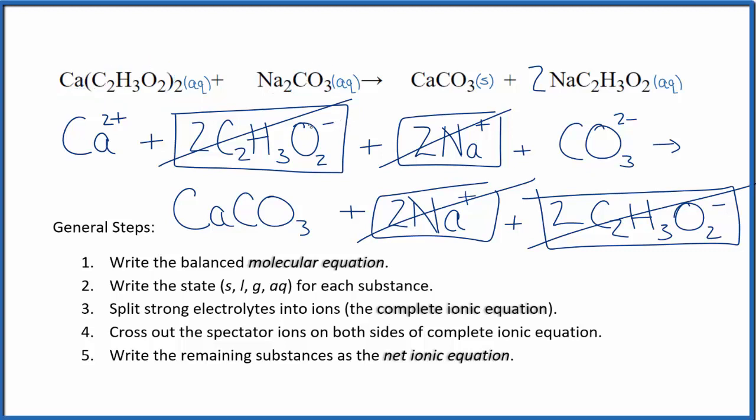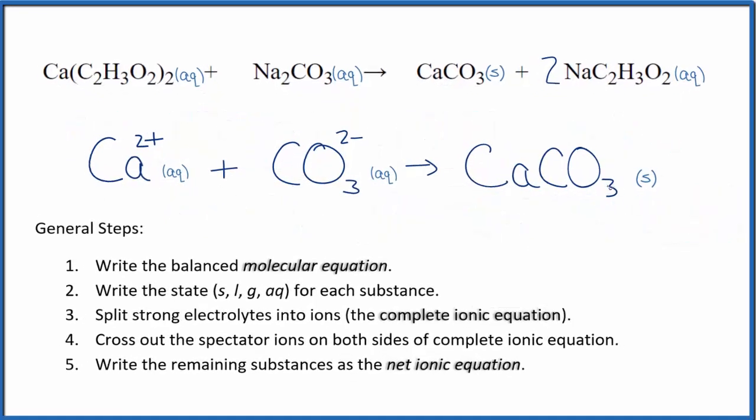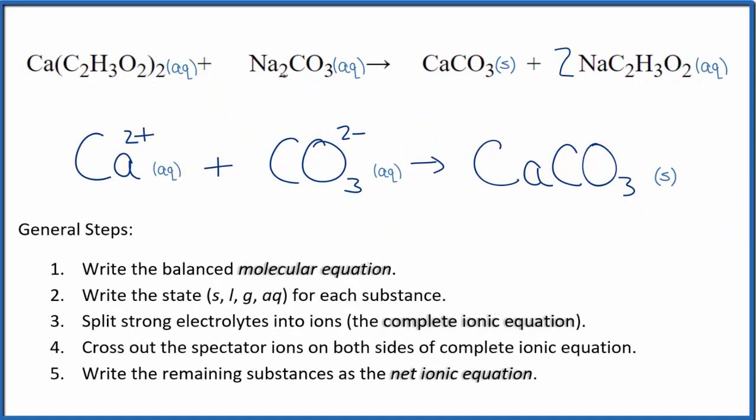Let me clean this up and write the states. We'll have our net ionic equation. So this is the balanced net ionic equation for calcium acetate and sodium carbonate. We have the charges balanced - we have a two plus, two minus, that adds up to zero so this is neutral on this side. Over here, this is a neutral compound, net charge of zero as well. Charges balanced, and if you count the atoms they're balanced too.